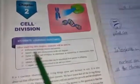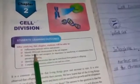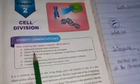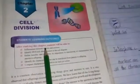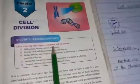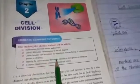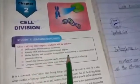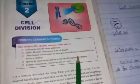In this chapter there are so many things to be learned and to know, which are DNA, chromosomes, mitosis, meiosis, and the characteristics that can be transferred from parents to offspring.